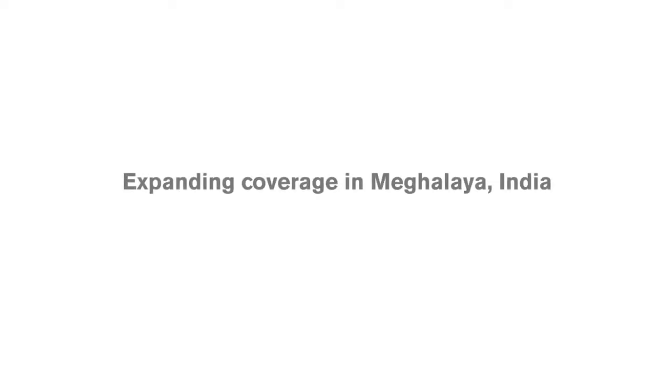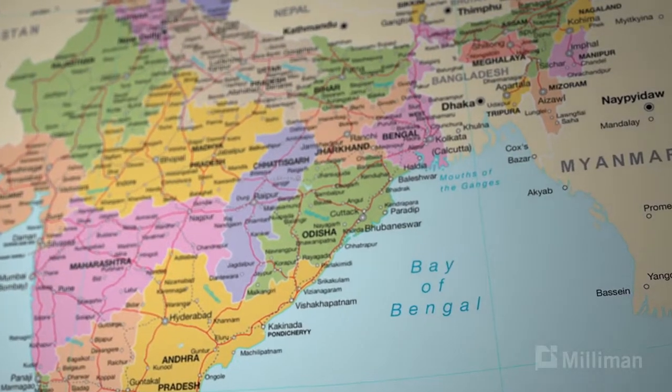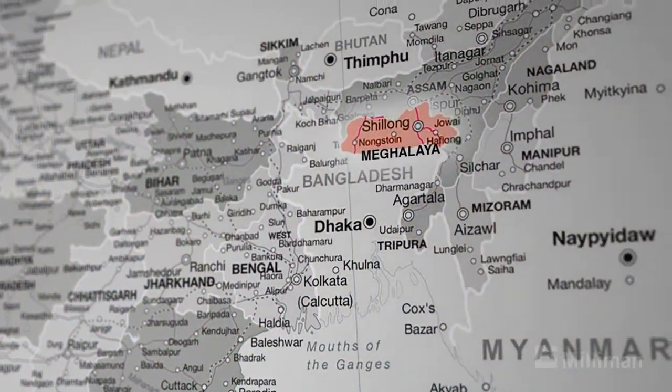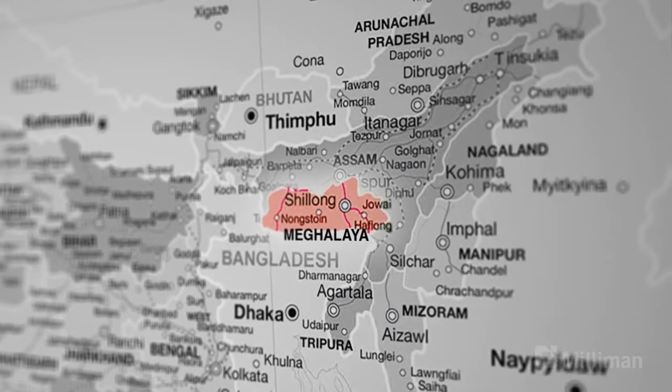Meghalaya is one of the state governments that looked at this basic model and felt they wanted to expand it to provide the same kind of services to people above the poverty line — middle-income groups and higher — making a more universal health insurance program. They wanted input on what the additional benefit coverage should be: what other surgeries and hospitalizations to cover, what the needs of the state are, what other conditions should be included, and how those should be costed.